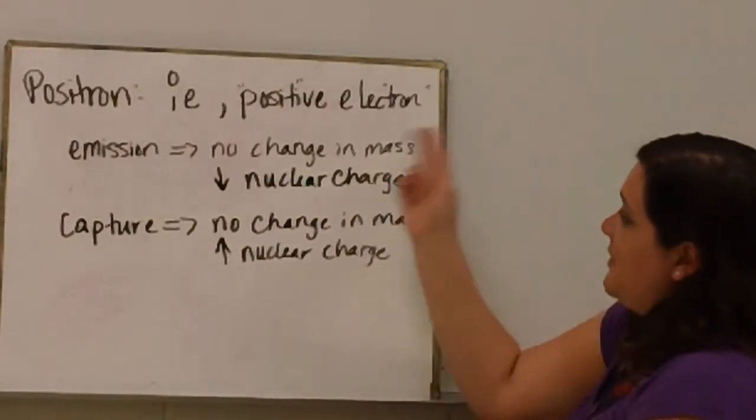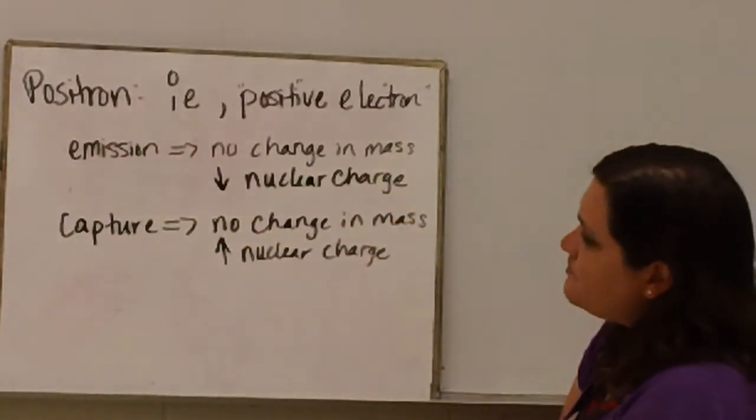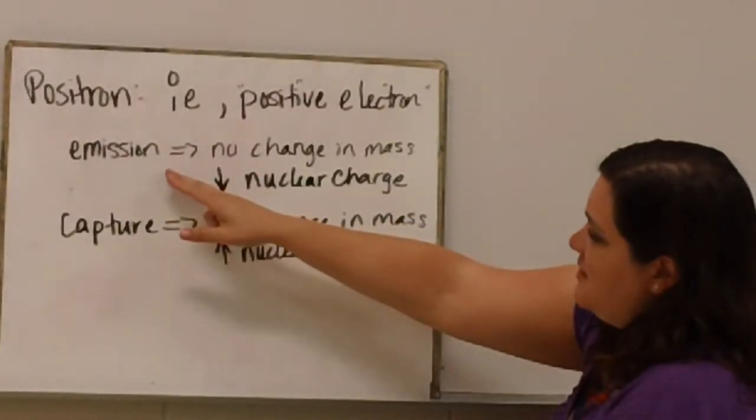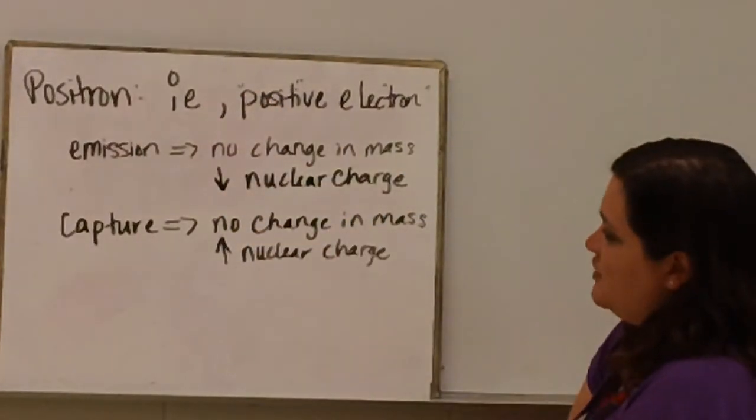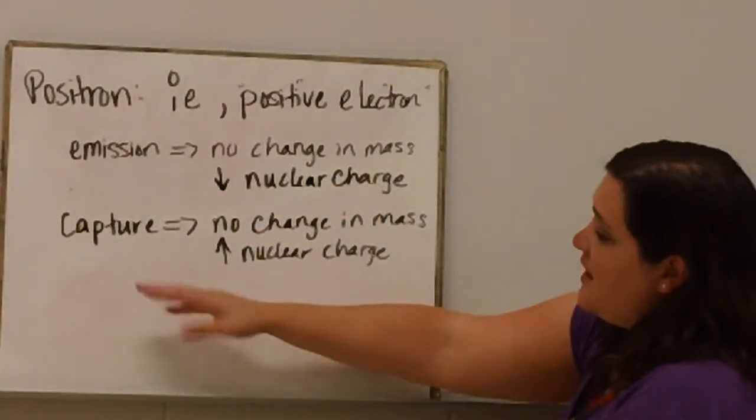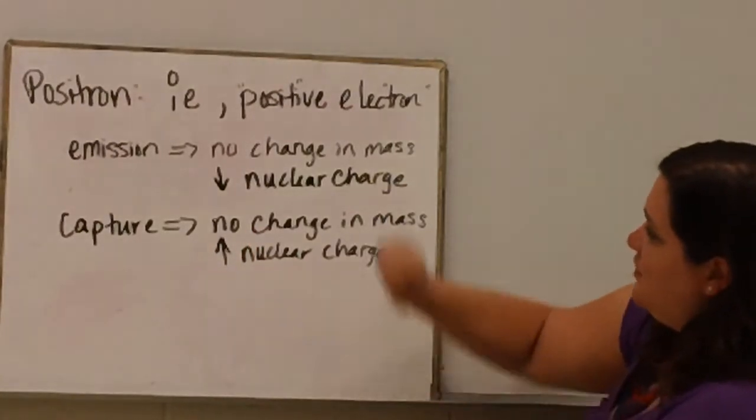Positrons are basically a positive electron. They are the symbol of 0+1e. If we have positron emission, we are not going to have any change in our mass, but we are going to decrease the nuclear charge. If we have positron capture, we are going to have still no change in mass, but an increase in nuclear charge.